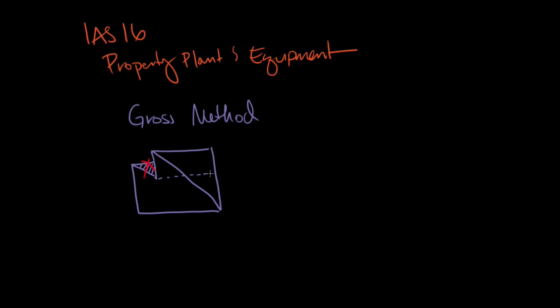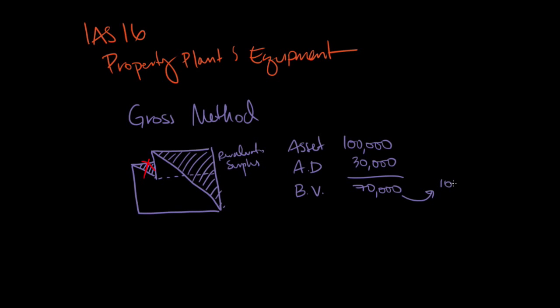Again, the difference is going to be recorded as a revaluation surplus. So when we had that same asset of $100,000, with accumulated depreciation of $30,000, the book value is $70,000. If we revalue the asset to $105,000, that 50% increase, we're going to wipe out accumulated depreciation and have a balance of zero, and revalue the asset itself to $105,000, adding $5,000 to the asset.